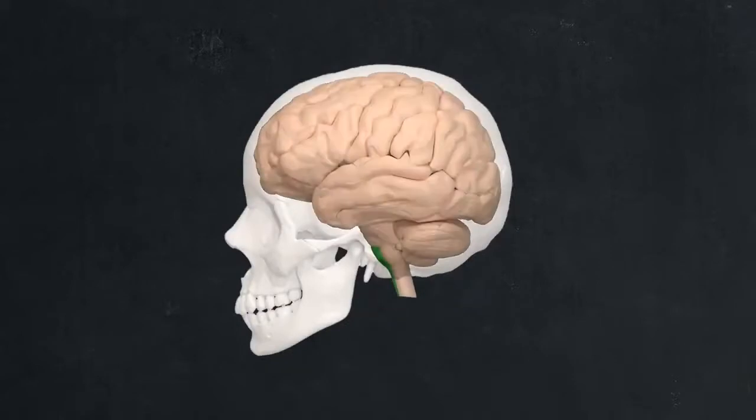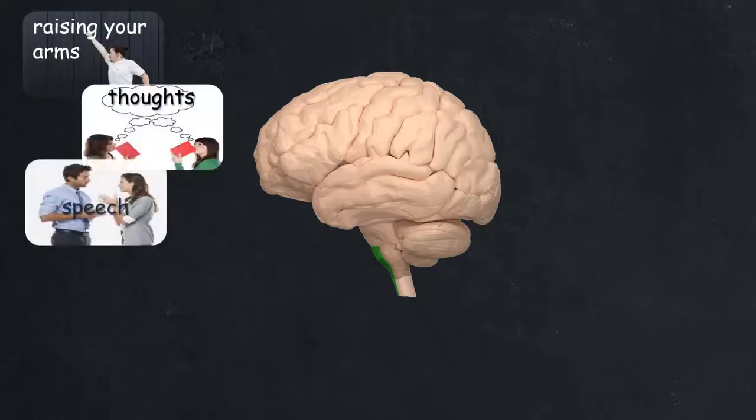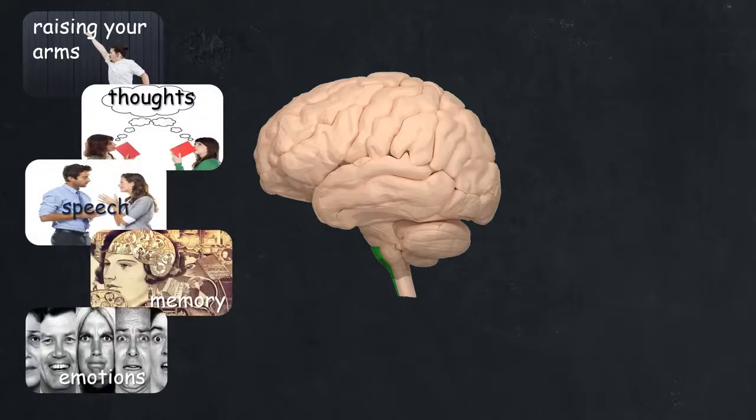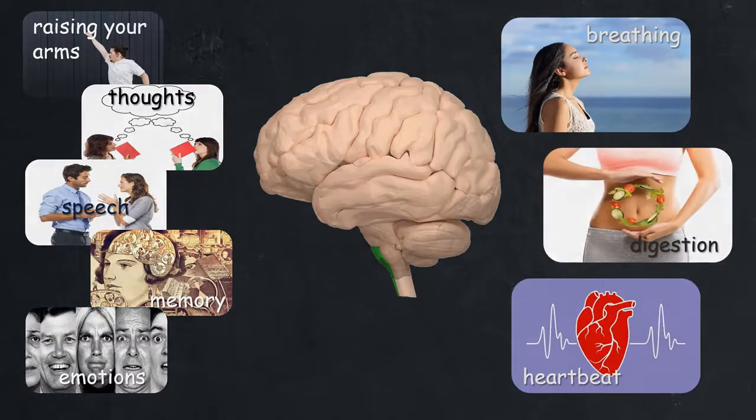The human brain is protected by the skull or the cranium. The brain is the control system of your body because it takes charge of your voluntary actions like raising your arms, thoughts, speech, memory, and emotions. It controls involuntary actions such as breathing, digestion, and heartbeat.